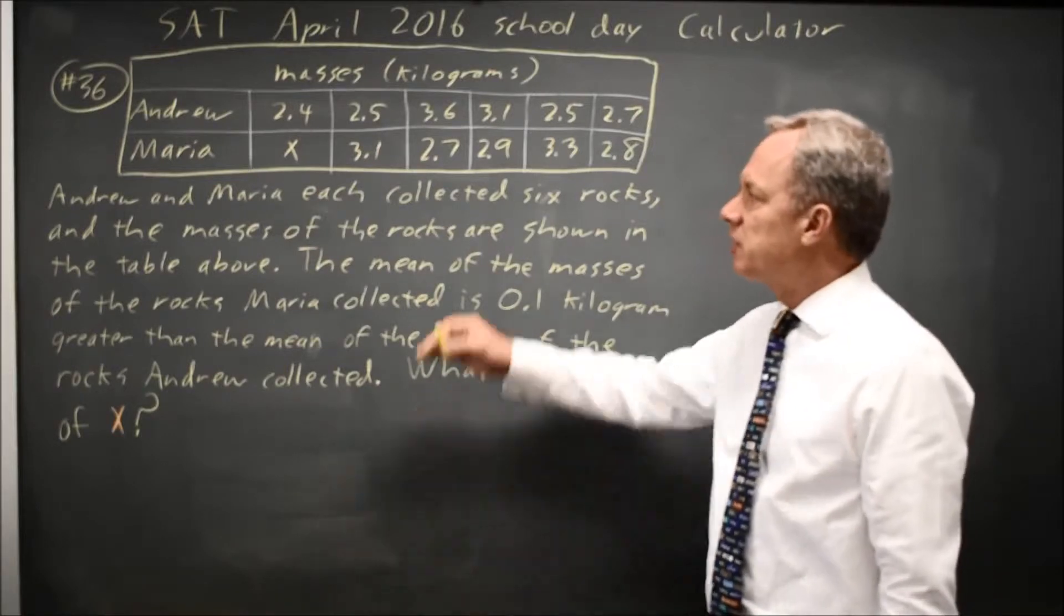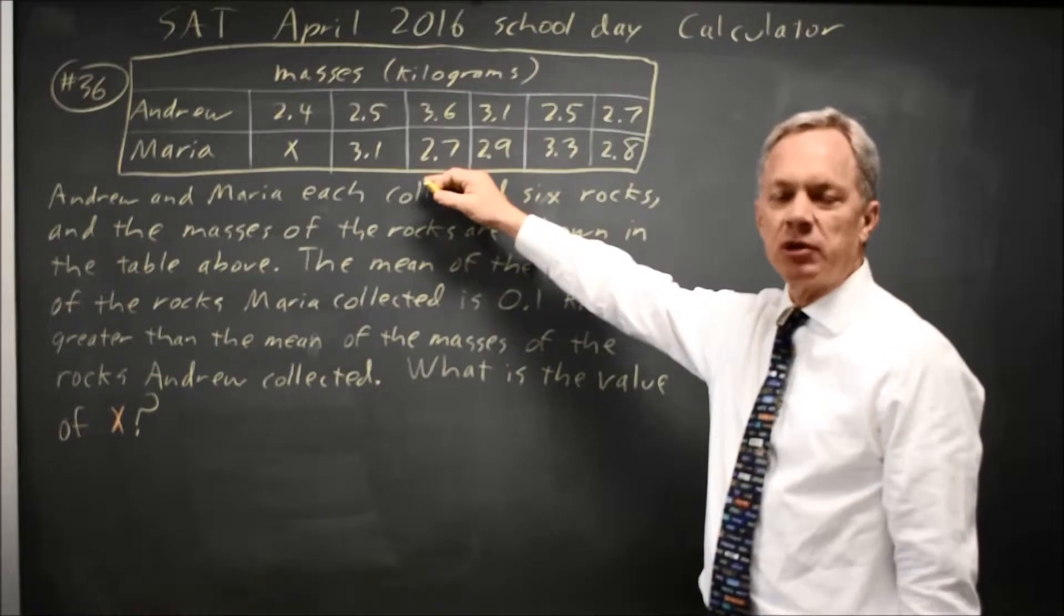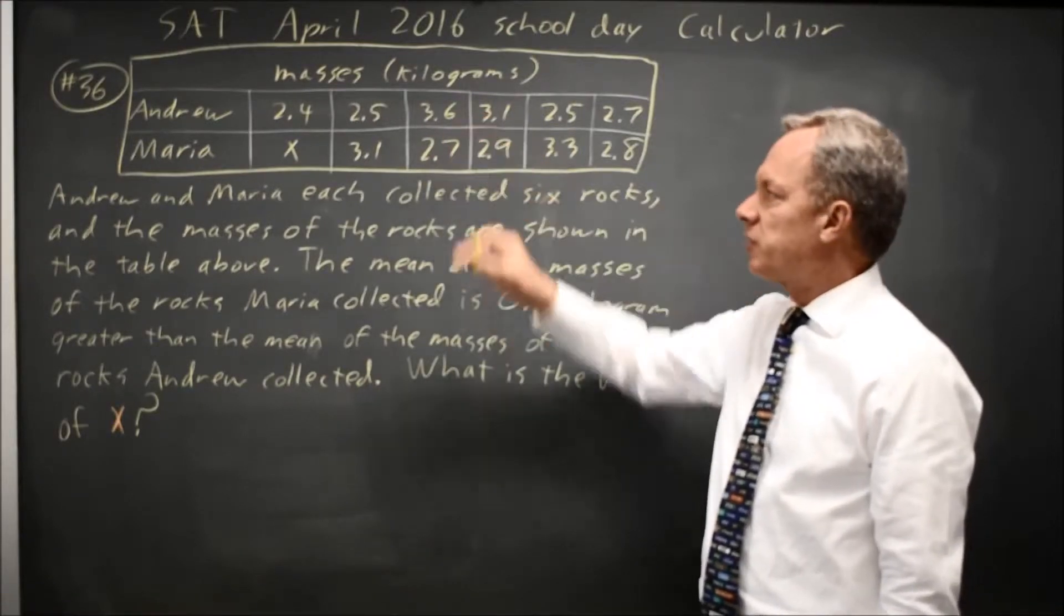College Board gives us a table of values for the masses of rocks collected and they tell us the mean for Maria's rocks is .1 more than the mean for Andrew's rocks.